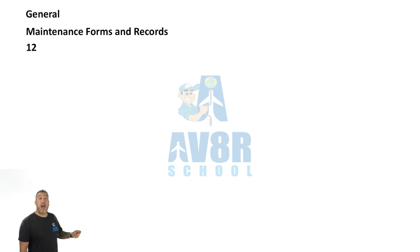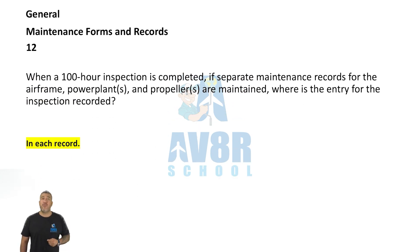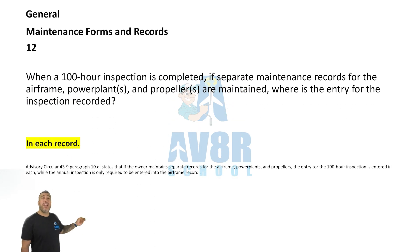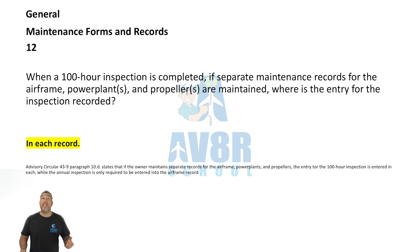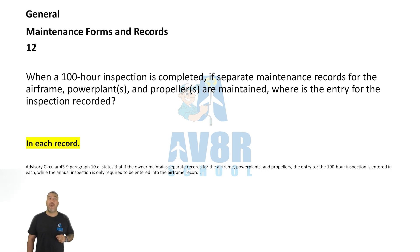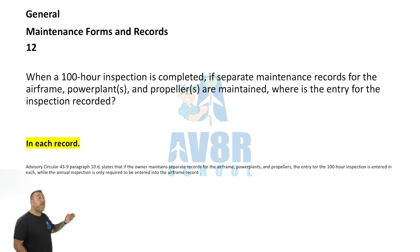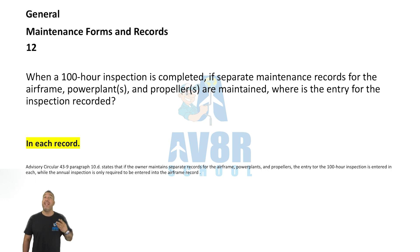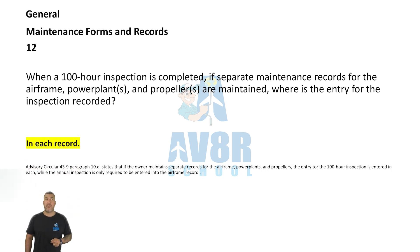Number twelve: When a 100-hour inspection is completed, if separate maintenance records for the airframe, power plant, and propellers are maintained, where is the entry for the inspected records? It is in each record — the entry must be made in each individual record.